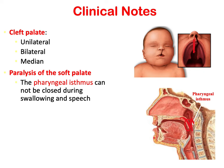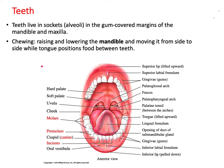Regarding the teeth: teeth are held in the alveolar process of the maxilla and mandible and are fixed with the periodontal ligament inside the alveolar processes — known as sockets — and are partially covered by the gum. More about this will be covered when discussing the mandible in the musculoskeletal system.